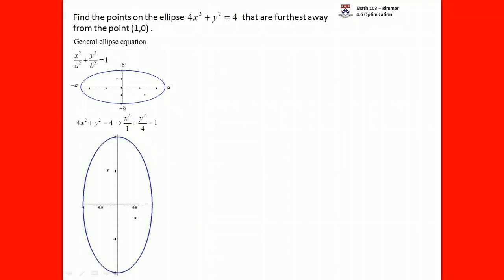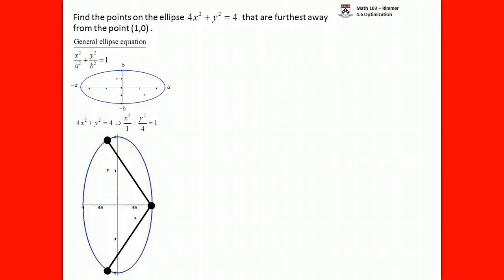Let's graph that — this is what the ellipse looks like. Our job is to find the points on this ellipse furthest from the point (1, 0). That point is on the ellipse: when x=1 and y=0 the equation is satisfied. You might think the opposite point (-1, 0) would be furthest away, but that distance is only 2. There are actually other points further away, which we'll find.